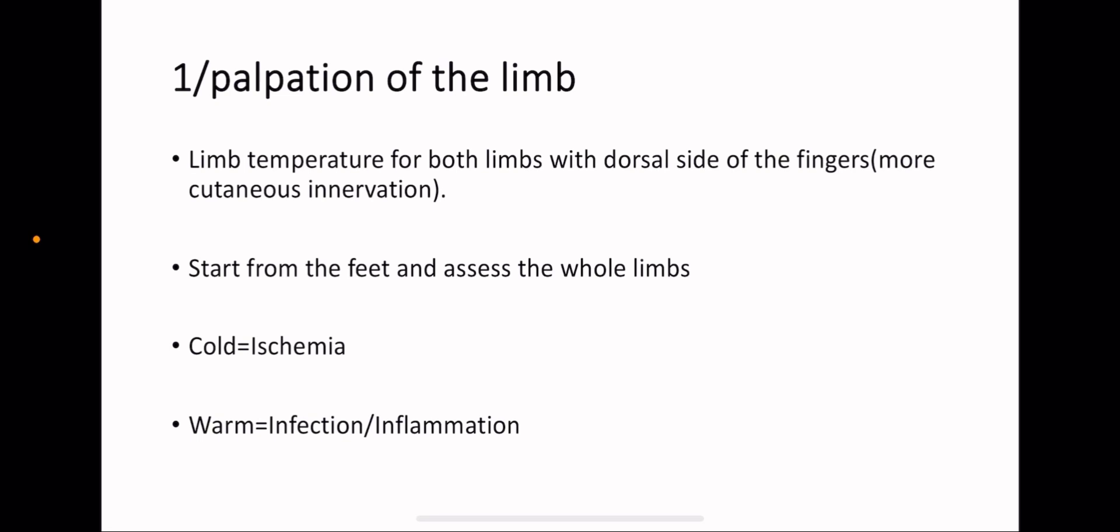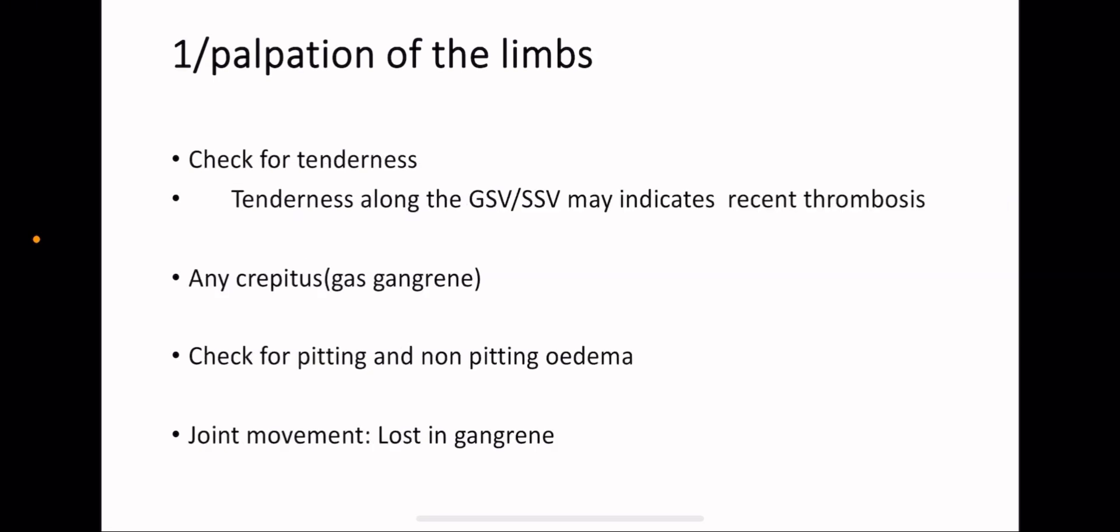Firstly, palpation of the limb. Check for the limb temperature of both limbs with dorsal side of the fingers. Why we do that? Because there is more cutaneous innervation on the dorsal side. Start from the feet and assess the whole limb. If you find coldness in the limb, this may indicate ischemia. If you find warmness, this may indicate infection or inflammation.